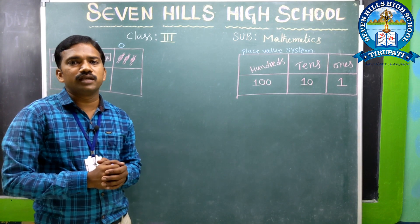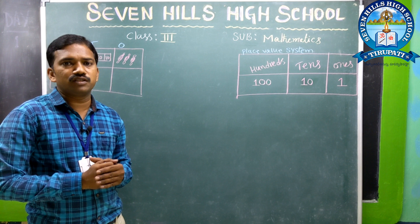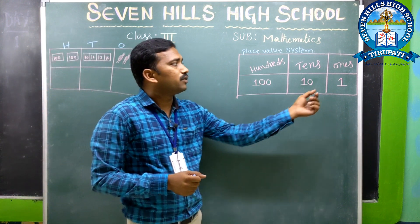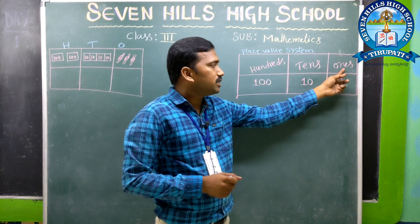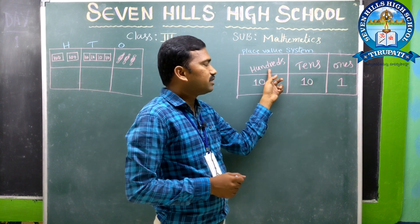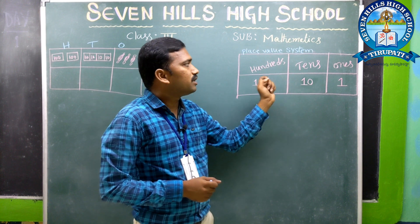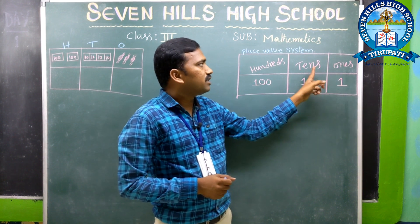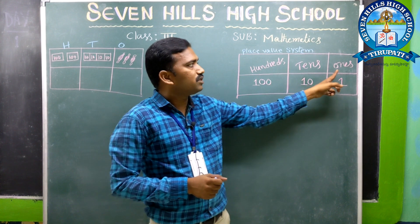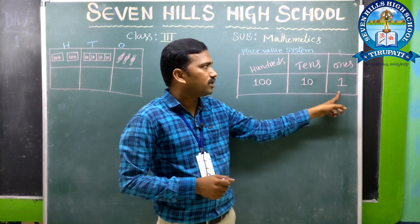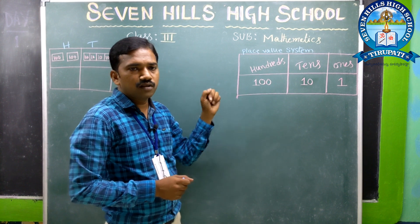Now, how to read 3-digit numbers? We know the place value system table — that is 1s, 10s, and 100s. The value of the 1s place is 1, the 10s place value is 10, and the 100s place value is 100.